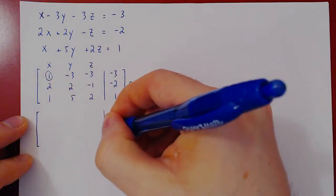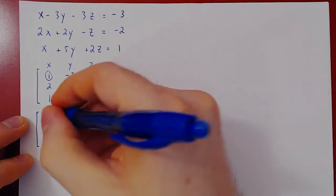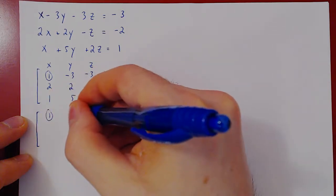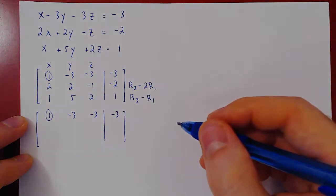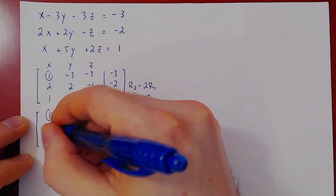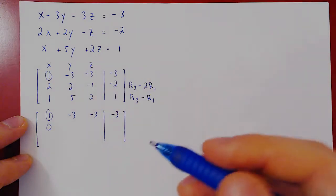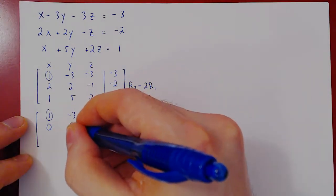We first recopy row 1 as we're not changing it. Apply the first row operation: 2 minus 2 is 0. 2 minus 2 times negative 3 is 2 plus 6, positive 8.